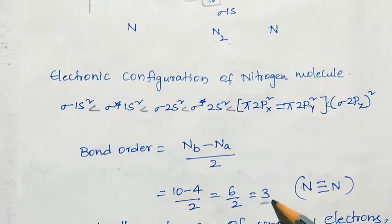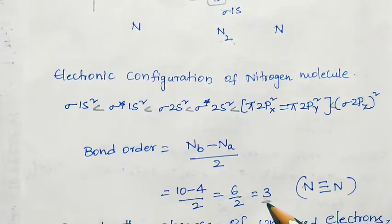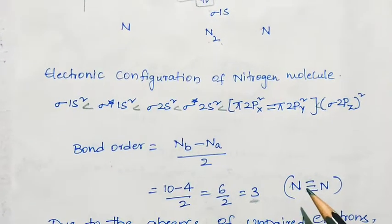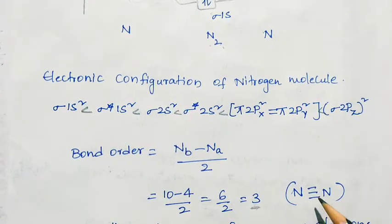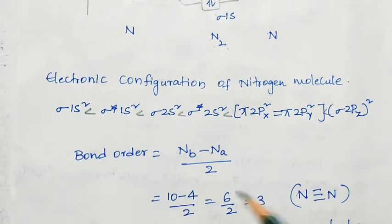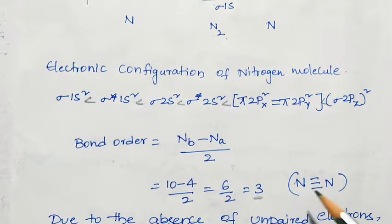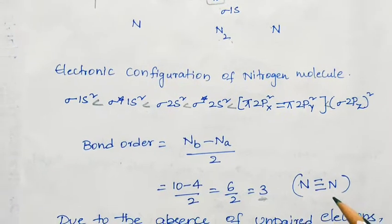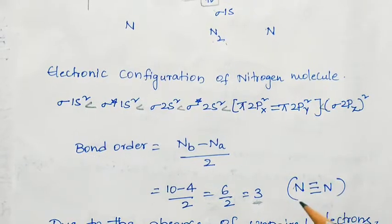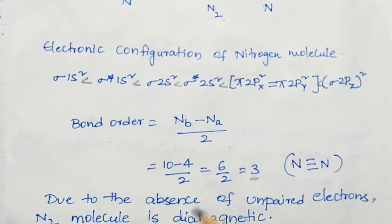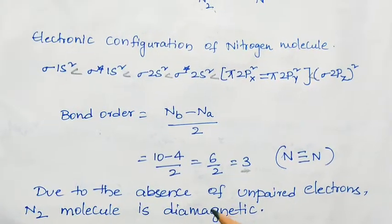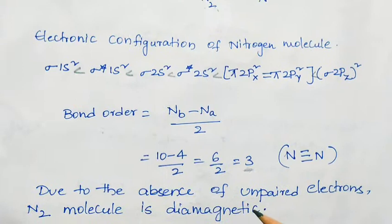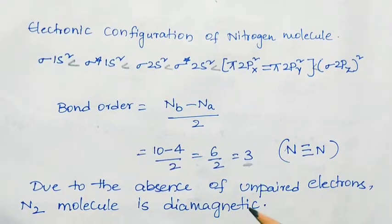So bond order = (10 − 4) / 2 = 3. The bond order of nitrogen molecule is 3, meaning 3 bonds are present between the 2 nitrogen atoms. Due to the absence of unpaired electrons, nitrogen molecule is diamagnetic in nature.